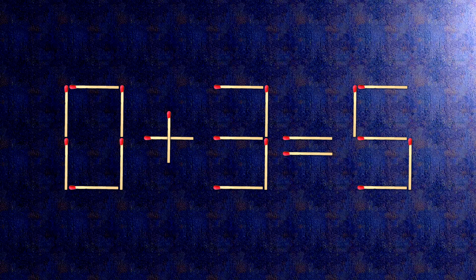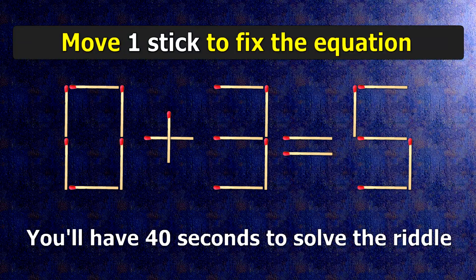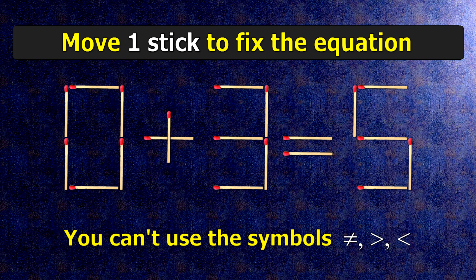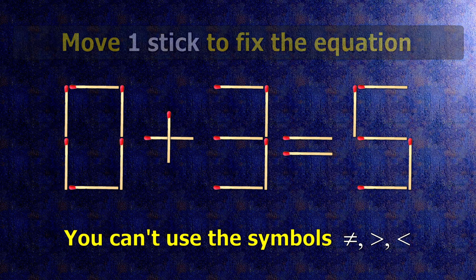We have the equality 0 plus 3 equals 5. Our equality is wrong. We need to move one match to make our equality correct.